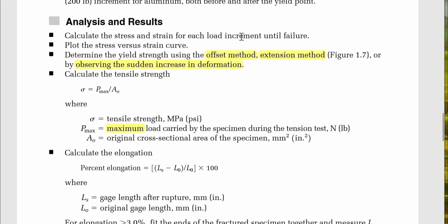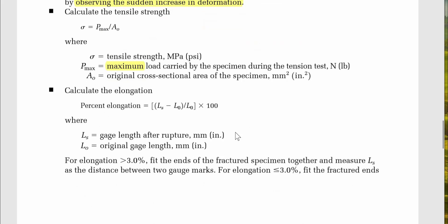For analysis, calculate the stress and strain for each load increment until failure and plot the stress-strain curve. Determine the yield strength using the offset method, extension method, or by observing the sudden increase in deformation. Then calculate the tensile stress: σ = P_max / A₀, where σ is the tensile stress in MPa, P_max is the maximum load carried by the specimen from the UTM machine, and A₀ is the original cross-sectional area in mm².